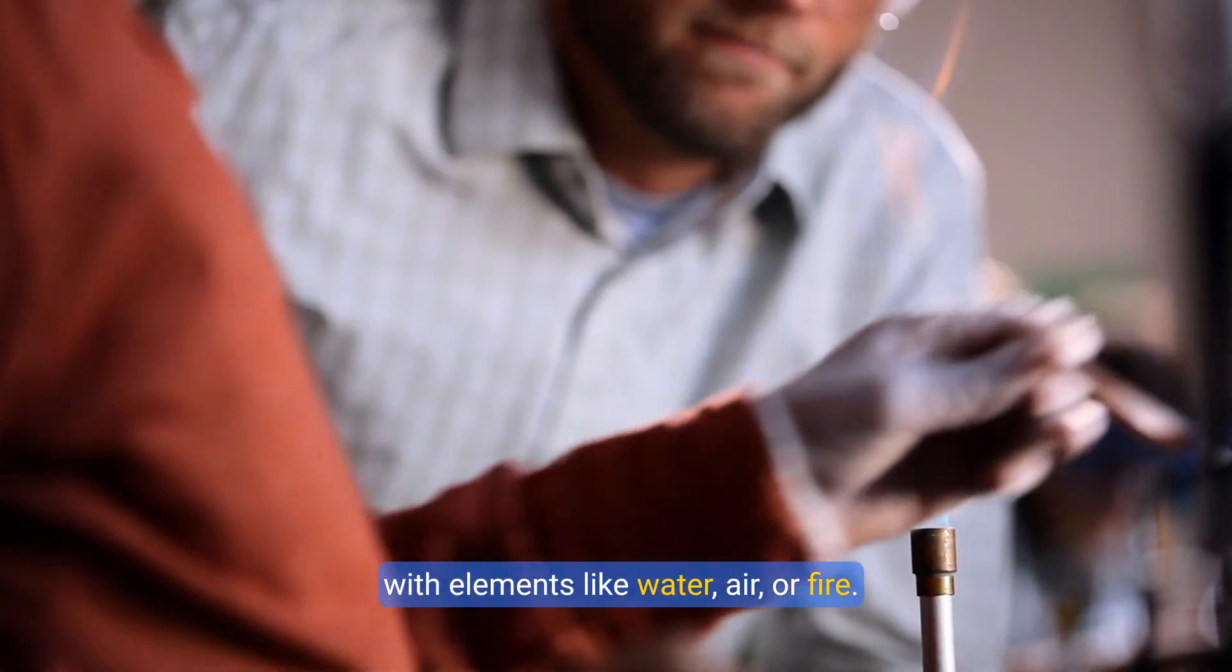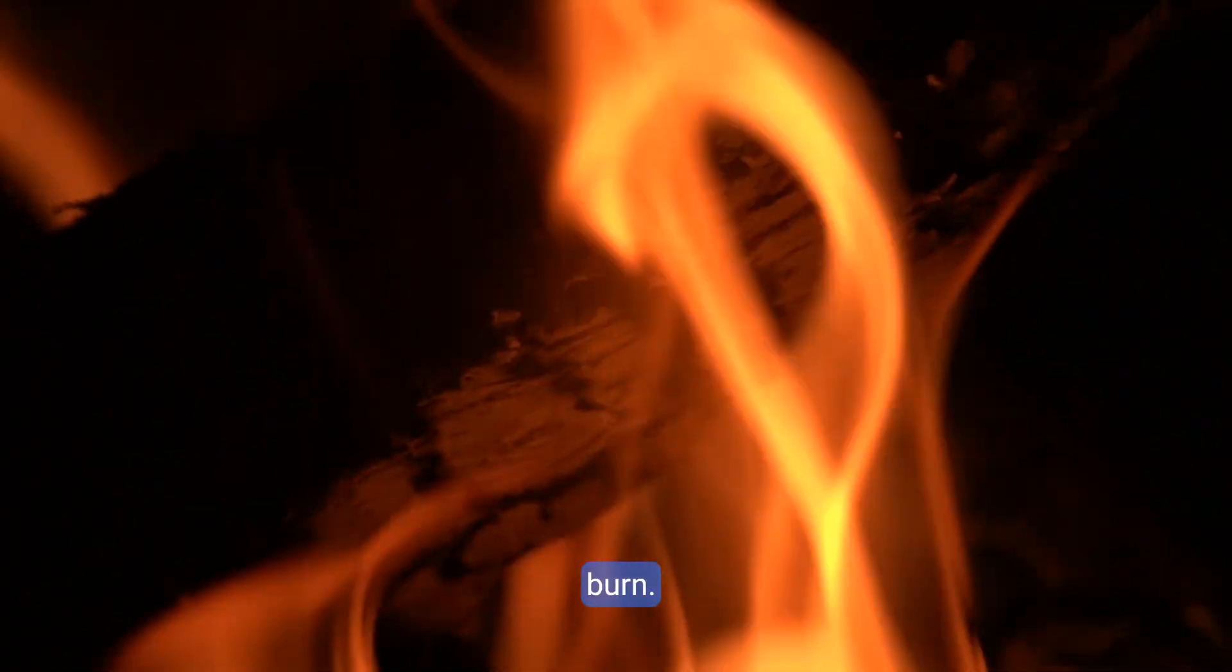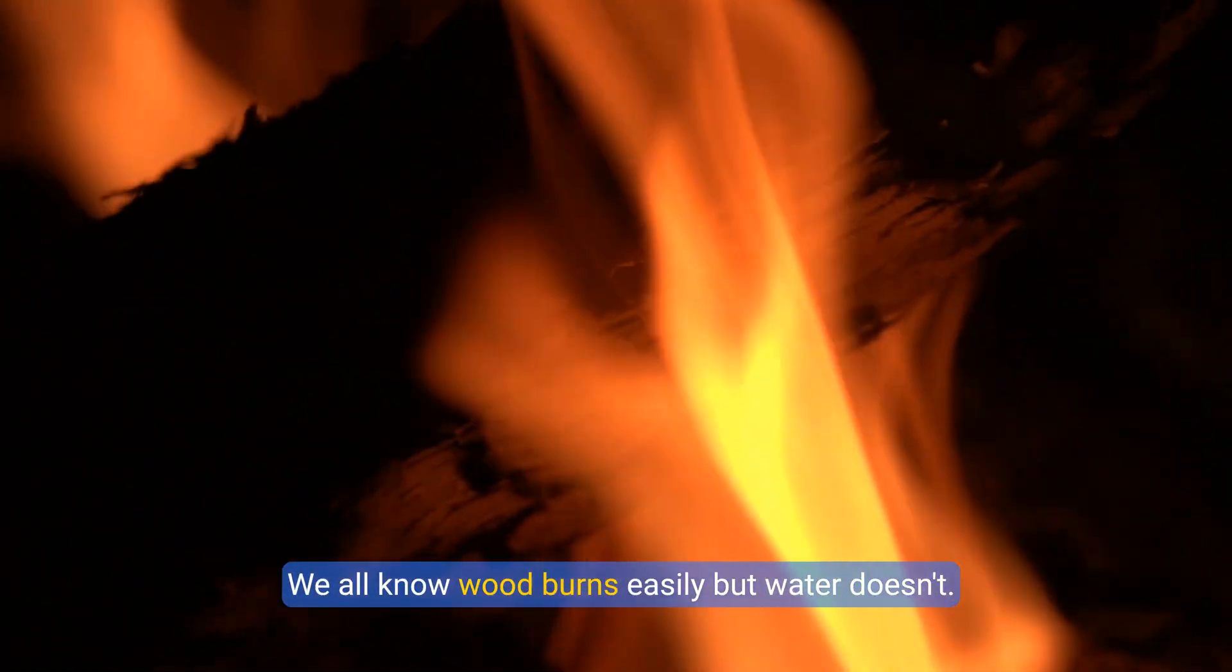Chemical properties, on the other hand, describe how a substance changes when it comes into contact with elements like water, air, or fire. A good example is flammability, or the ability to burn. We all know wood burns easily, but water doesn't.